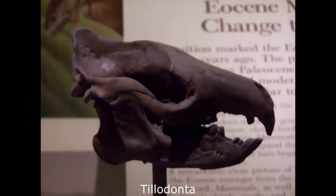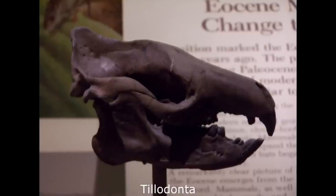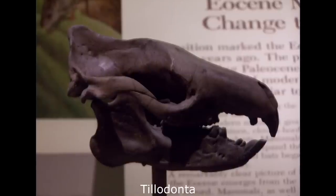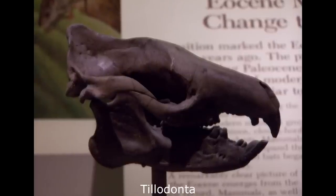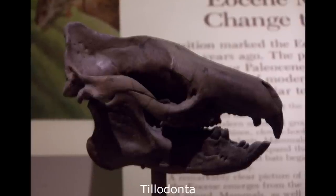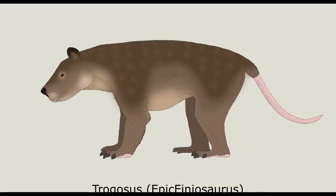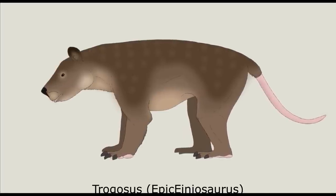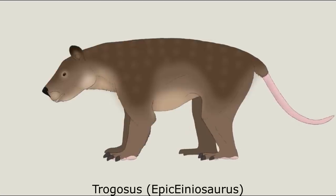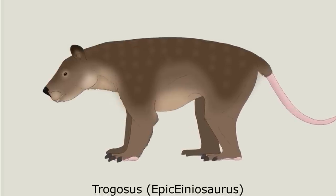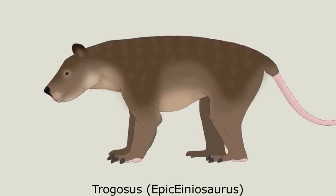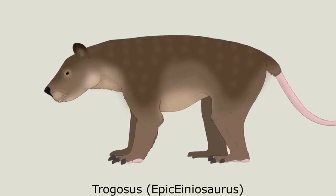Their closest relatives are probably the bizarre Tylodonts, a lineage of digging and rooting mammals that developed enlarged rodent-like incisors. They seem to have originated in China during the early Paleocene, and thrived in the hothouse world of the Eocene, feeding on roots and tubers in tropical forests. Some later forms became quite large, comparable to Asian black bears in terms of size, with the genus Trogosus weighing up to 150 kilograms or 330 pounds. The group died out at the end of the Eocene, probably being unable to adapt to the cooling and drying climatic changes taking place at this time.